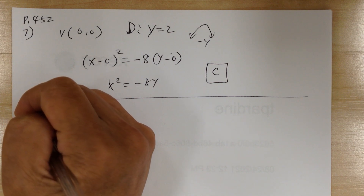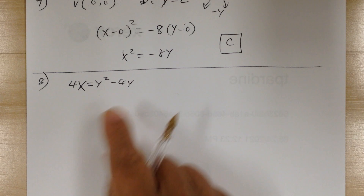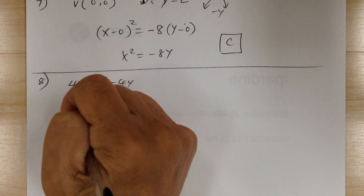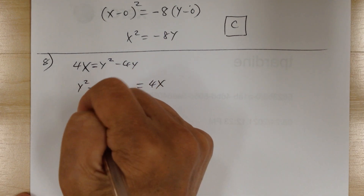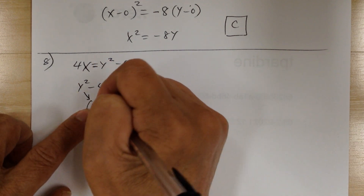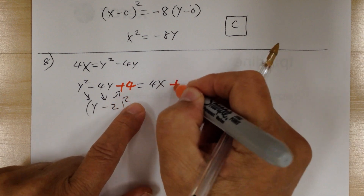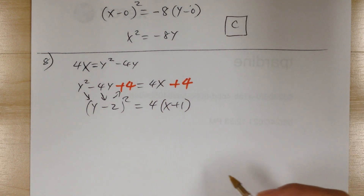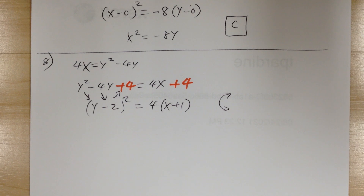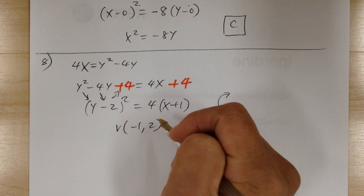Number 8 is the other way around. You have 4x equals y squared minus 4y. Before starting, complete the square on the left-hand side — flip it: y squared minus 4y equals 4x. Leave a space, then make a perfect square: y minus 2, squared. You need plus 4, so add 4 on both sides. From here, find 4, giving x plus 1. This is the positive x direction. The vertex is at negative 1, 2. Answer B.